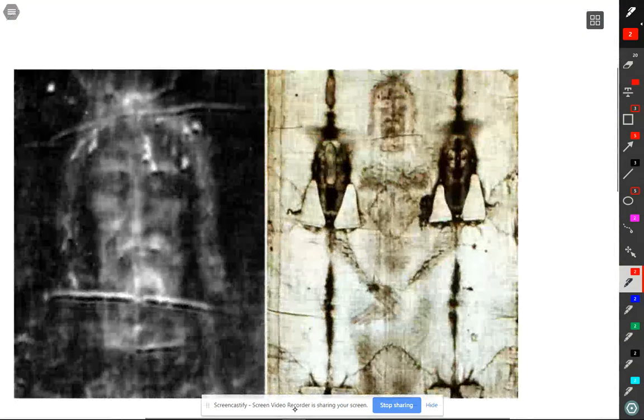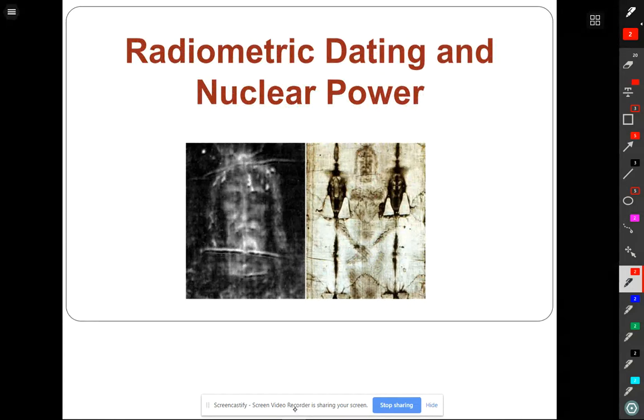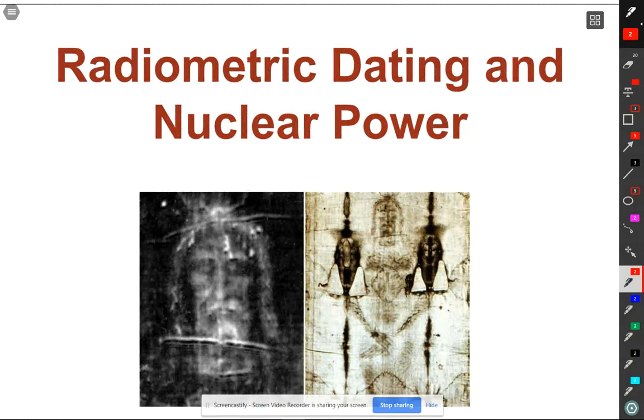Anybody know what this picture is? This is called the Shroud of Turin. And it's an interesting story about radiometric dating. So when we get there, which probably won't be until Monday, we'll talk about radiometric dating and how that plays into our Shroud of Turin story.